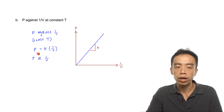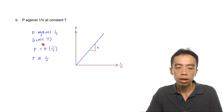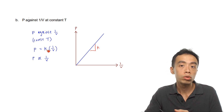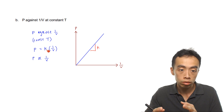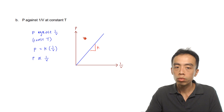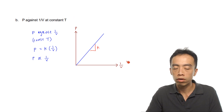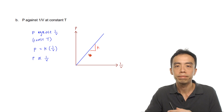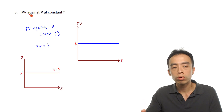Pressure is the y-coordinate, 1 over V is the x-coordinate, and k is the gradient. This gives us a y equals mx graph — a straight line passing through the origin with gradient equal to k.